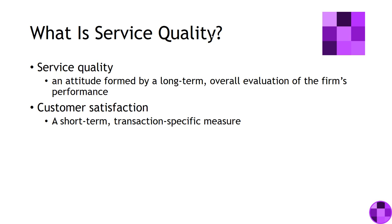Those uncontrollable facets include contextual issues, situational issues, character traits of the customer, and temporary traits of the customer — elements we can't address. But service quality consists of elements we can address, and this is why we engage it and measure it.